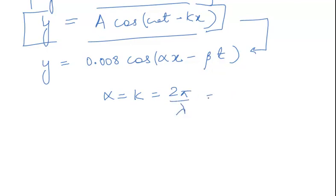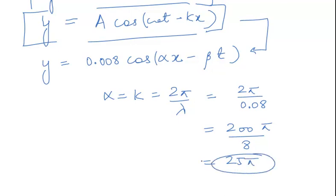Now the value of λ is given to us as 0.08. This is equal to 2π divided by 0.08, which is 200π/8 or 25π. So the value of α is 25π.